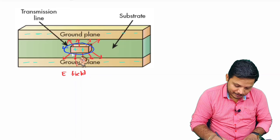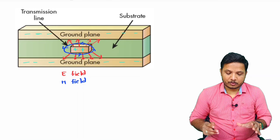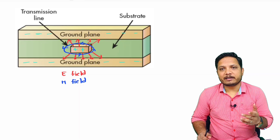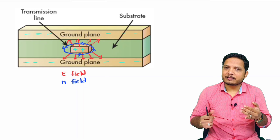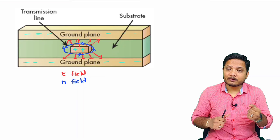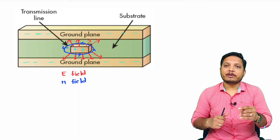For more detail on microstrip transmission line, a complete explanation of the microstrip antenna is available in the antenna playlist. For characteristic impedance, Z0 equals the square root of (R + jωL) divided by (G + jωC), and based on that, impedance matching can be provided.